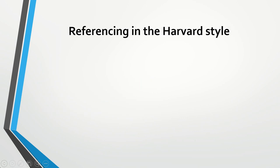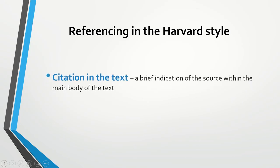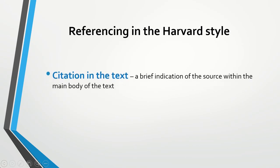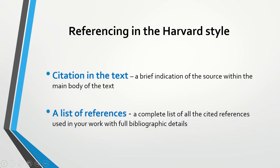Referencing in the Harvard style is a two-part process. It involves citations in the text, which is a brief indication of the source within the main body of the text, and a list of references, which is a complete list of all the cited references used in your work with full bibliographic details. Now I am going to talk about each in more detail.